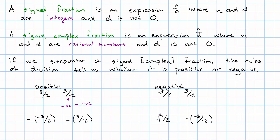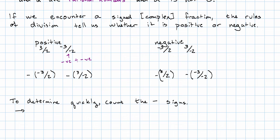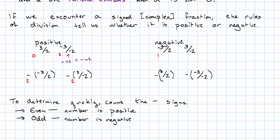Notice I've just put these fractions in parentheses so that it's easy to read with that opposite in front. One of the things we can do to quickly determine whether a signed fraction is positive or negative is just count the negative signs. If the number of negative signs is even, then the number is positive — we see zero negative signs, two negative signs, two negative signs, two negative signs. If the number of negative signs is odd, then the number is negative — we have one negative sign, one negative sign, one negative sign, three negative signs. To quickly determine whether the number is positive or negative, just count the number of negative signs.